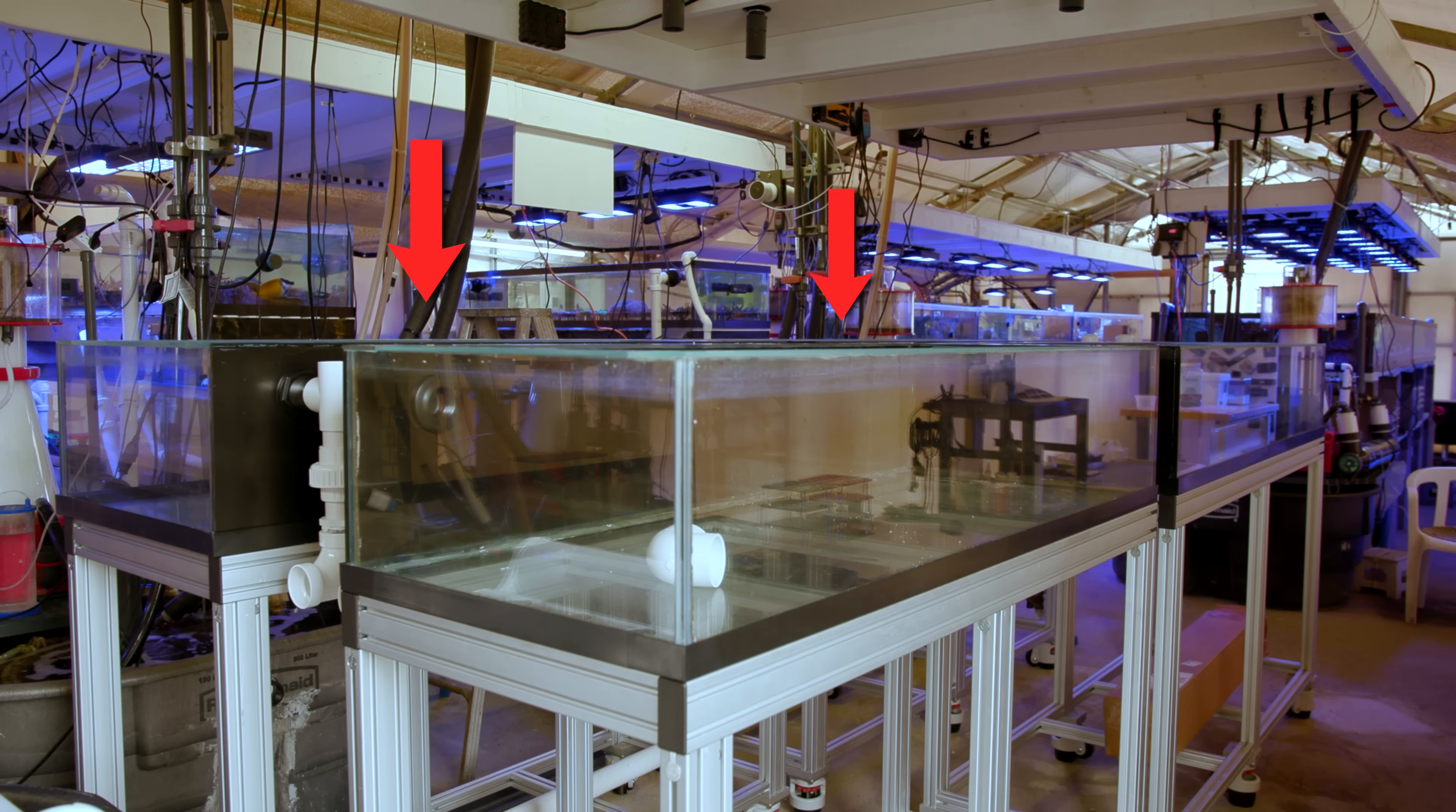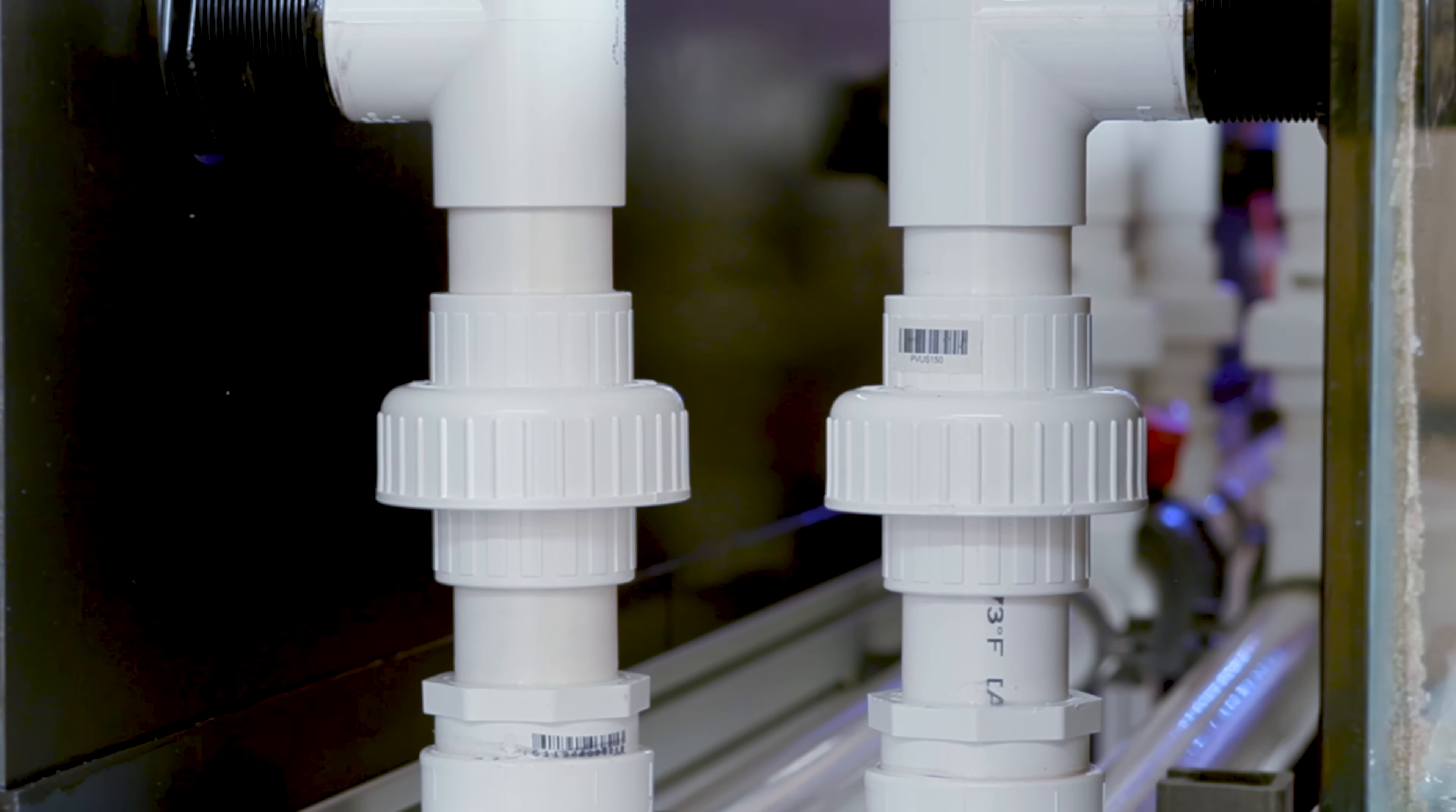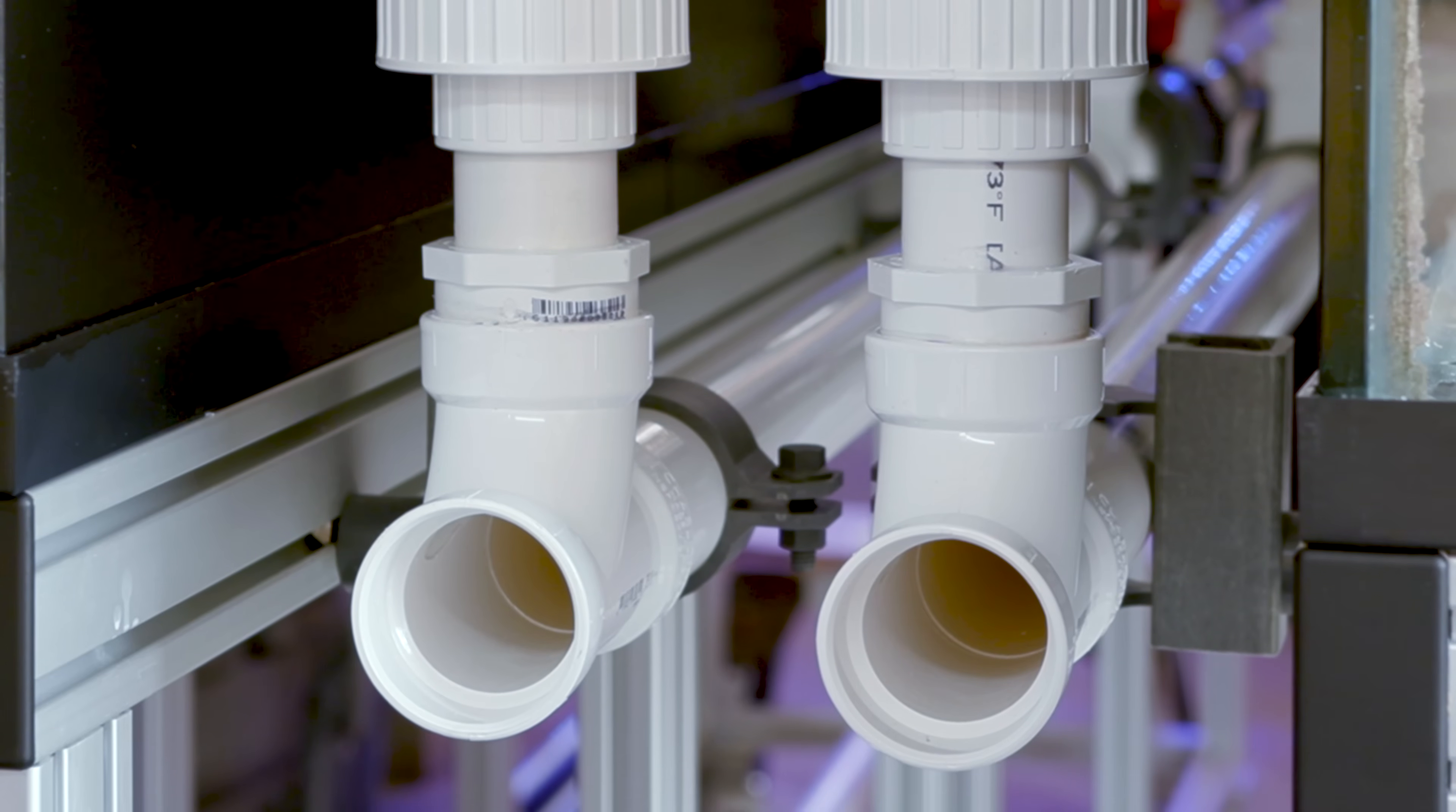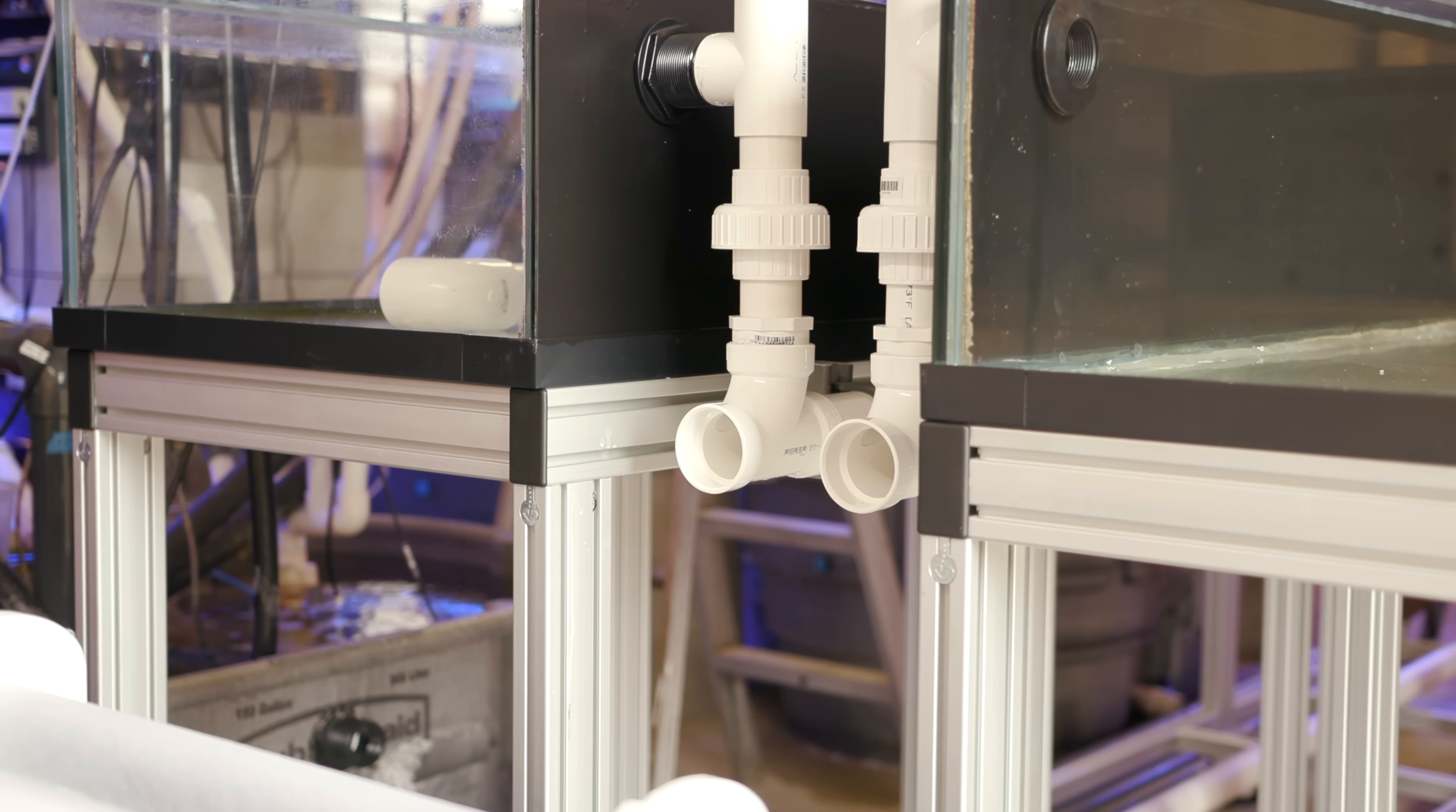Each of these tanks has two holes in it for inch and a half bulkheads. The idea at the time was perhaps one of them would be an input and one would be an output, but in this configuration they will both serve as drains. Those drains will go down into a two inch pipe and make their way all the way down to the sump. We threw in unions and true union ball valves so that in a pinch these tanks can be completely shut off and removed.